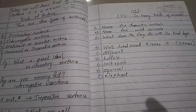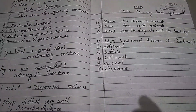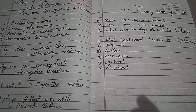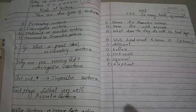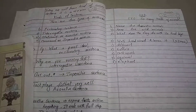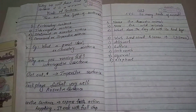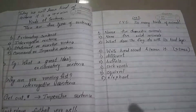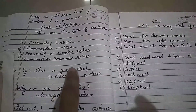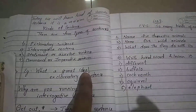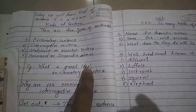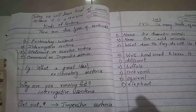Good morning students. Today's subject is Drama. In the last lecture, we tried to understand what are the kinds of sentences. There are four types of sentences: exclamatory sentences, interrogative sentences, assertive sentences and imperative sentences. These all we learned in the last lecture, that was on last Friday.